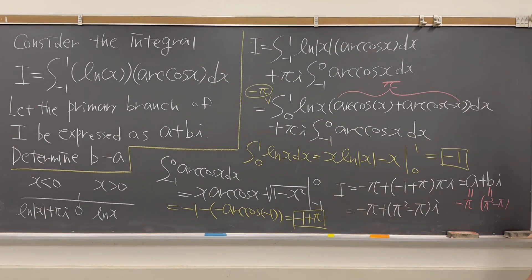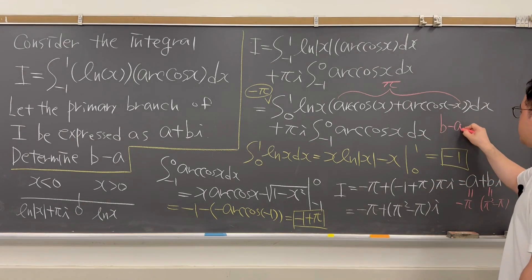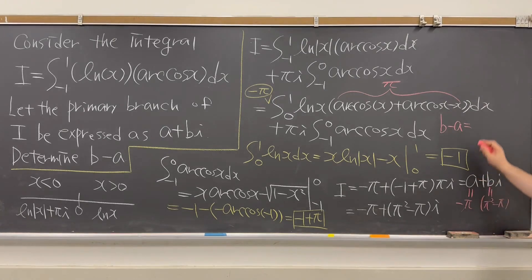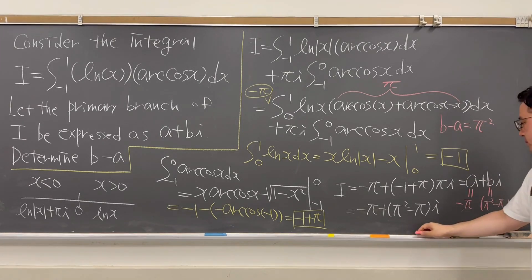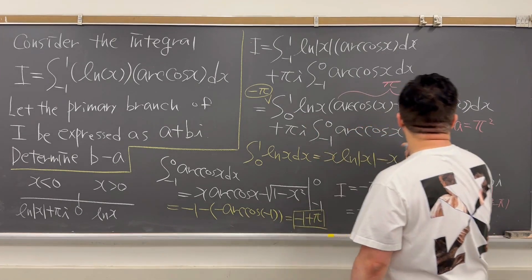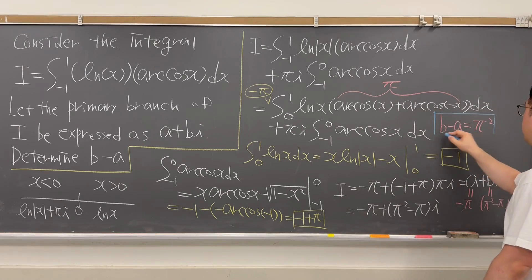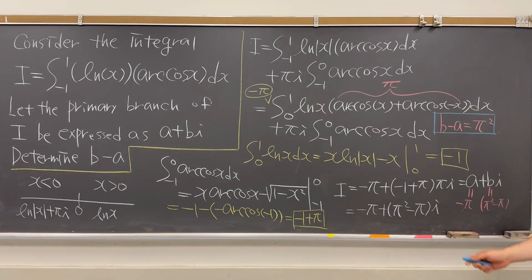Okay. Then at the same time, the question is asking you b minus a. So b minus a is then just going to be equal to, cancel out, π squared. So π squared is the answer for this question.